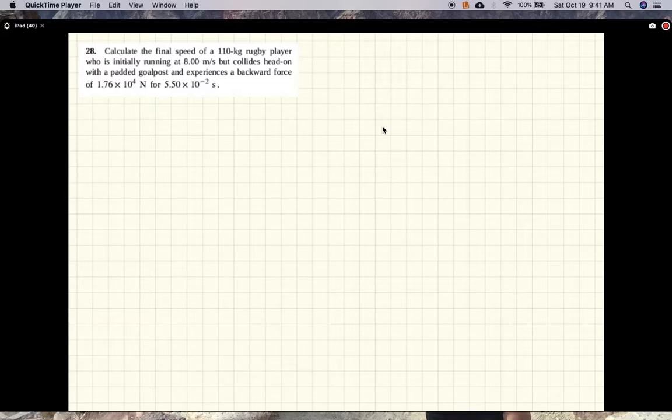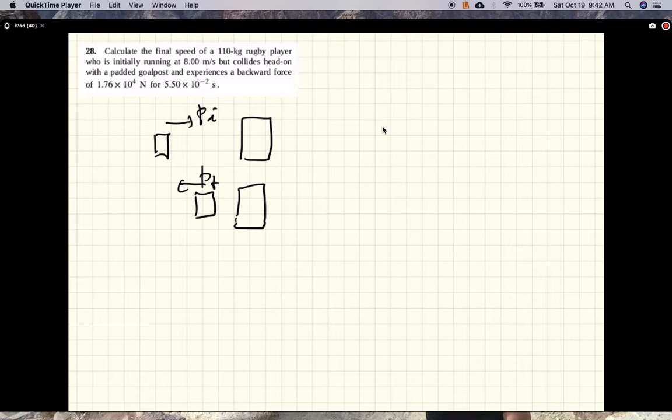All right, so here's a rugby player running into the goal post. Here's his initial momentum, here's his final momentum, and this was a result of the force that the post exerted.